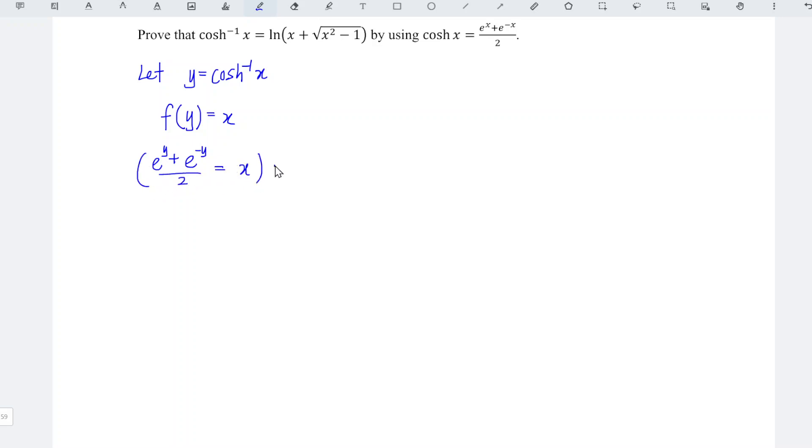We times the entire equation by 2, and we should obtain e to the power of y plus e to the power of negative y is equal to 2x.